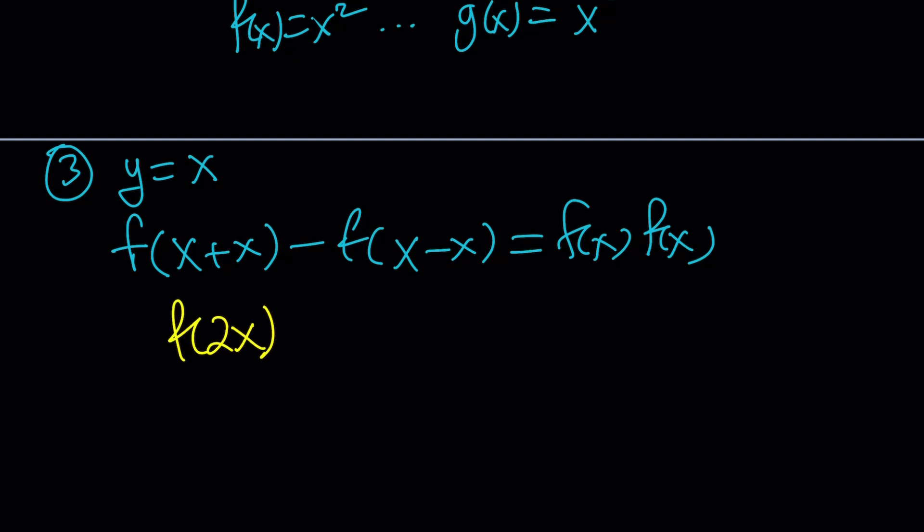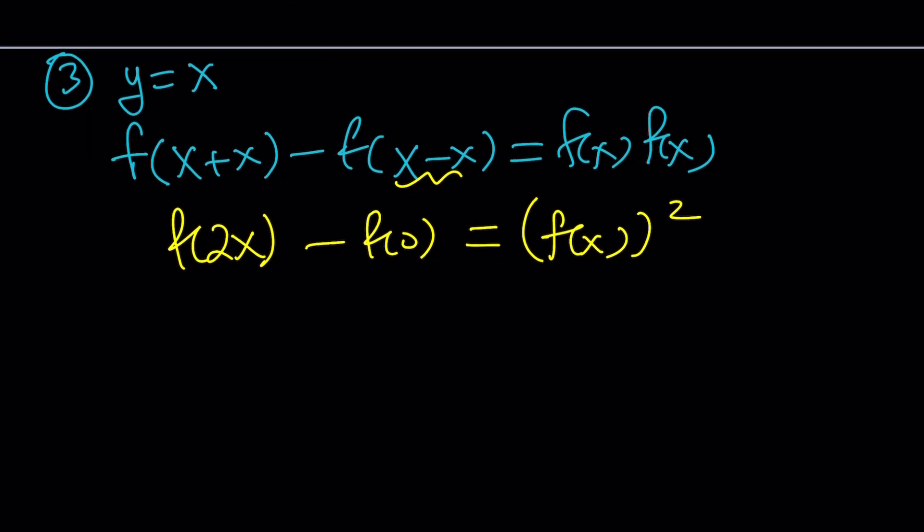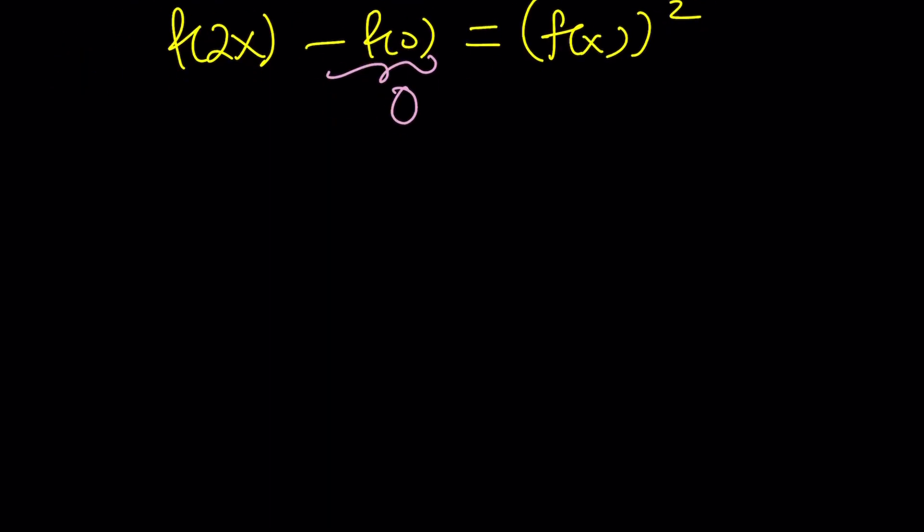f of 2x, this is going to be minus f of 0. And this will be f of x squared. Great. This is also another general statement that can be used because notice you can replace x with pretty much anything from the set of real numbers. But we're just going to simplify as much as possible. f of 0 is 0. Remember, that was the very first thing we found. See how valuable that is. And from here we get f of 2x equals f of x squared.